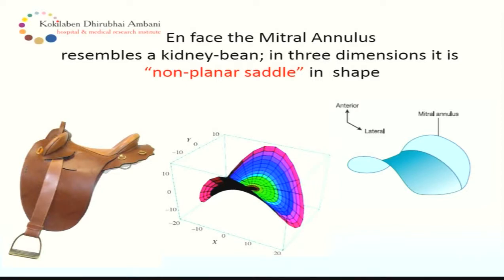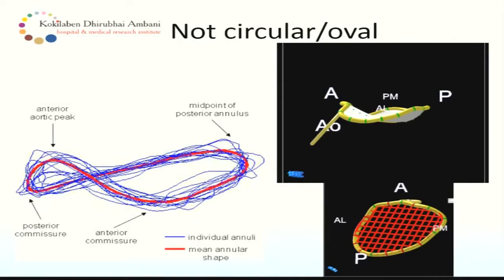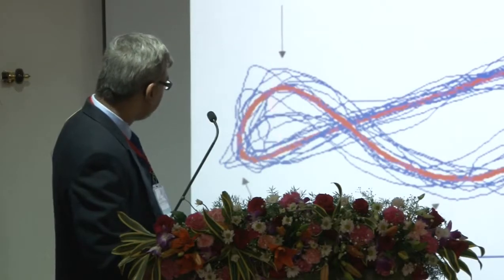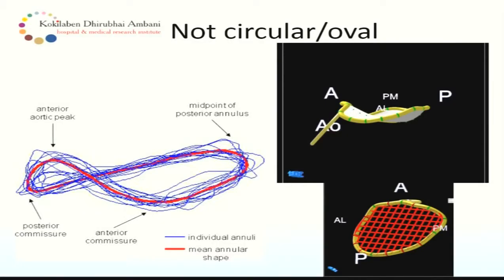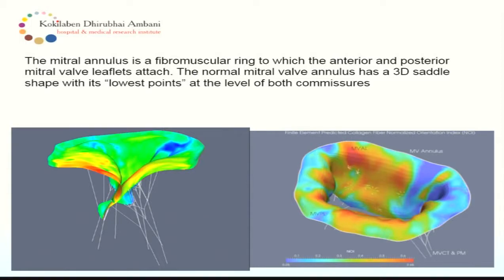When you look at the shape of the mitral valve, a lot has been done after 3D echo and other imaging techniques. It looks like a saddle. In phase, the mitral annulus resembles a kidney bean, but in 3D it is a non-planar saddle shape. It is not circular, neither is it oval — that is very important to know. These drawings show the annulus in different phases of heart contraction, with the mean shown in red. You have an anterior aortic peak corresponding to the midpoint of the anterior mitral leaflet and a midpoint of the posterior annulus as the higher points, while the lowest points are at the commissures — the posterior and anterior commissures. The mitral annulus is a fibromuscular ring to which the anterior and posterior leaflets are attached, with a 3D saddle shape with the lowest point at both commissures.